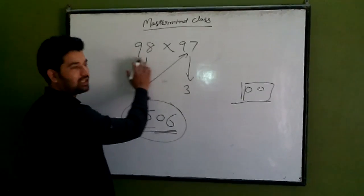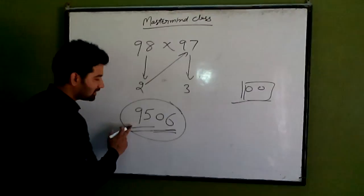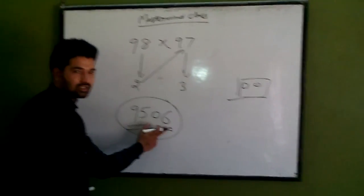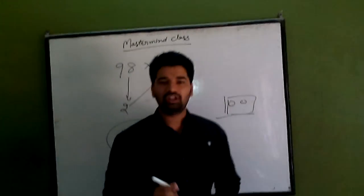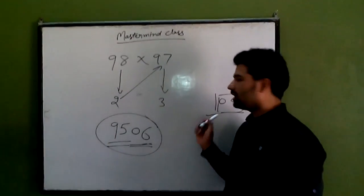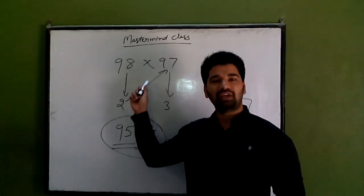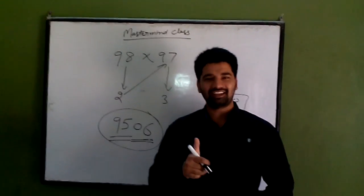So the multiplication of 98 x 97 is 9506. So you can solve 2 digit number multiplication near to 100 by using this method. Bye, take care.